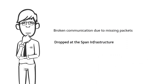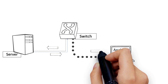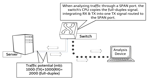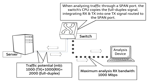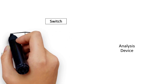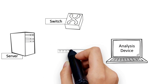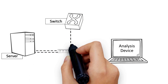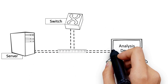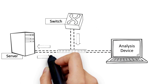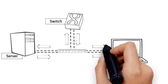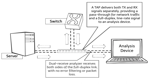Broken communication can occur due to missing packets dropped at the span infrastructure. When analyzing traffic through a span port, the switch's CPU copies the full duplex signal, integrating RX and TX into one TX signal routed to the span port. A TAP delivers both TX and RX signals separately, providing a pass-through for network traffic and a full duplex line rate signal to an analysis device. The dual receive analyzer receives both sides of the full duplex link with no error filtering or packet loss.